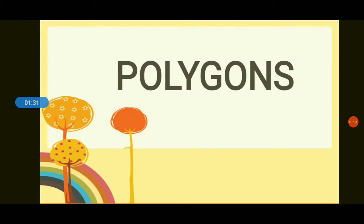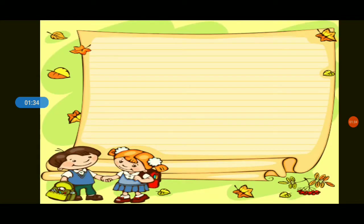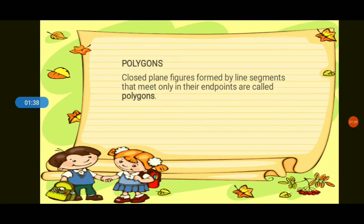Now let us talk about polygons. Closed plane figures formed by line segments that meet only in their endpoints are called polygons. A polygon is a closed plane figure formed by line segments that meet only in their endpoints.